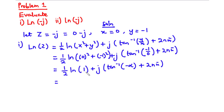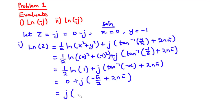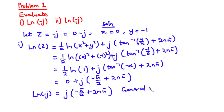ln(1) equals 0, so zero times one half is 0. Tan inverse of negative infinity equals negative pi over 2 (that is, negative 90 degrees). So we have j times (negative pi over 2 plus 2n pi). This is the general value of Ln(-j). You can substitute integer values of n to get the set of all possible values.